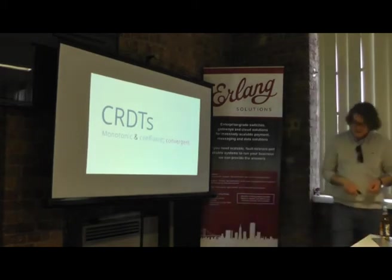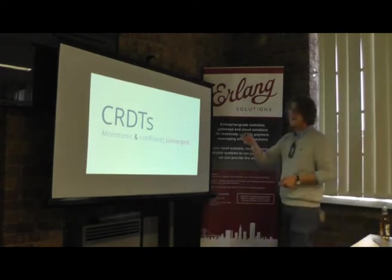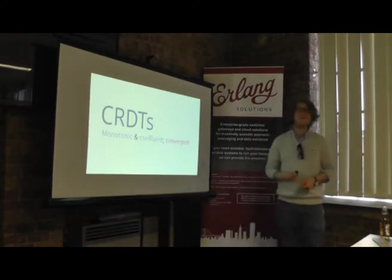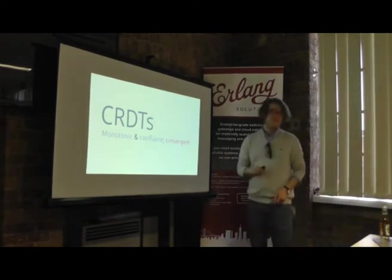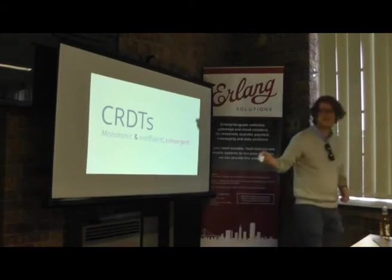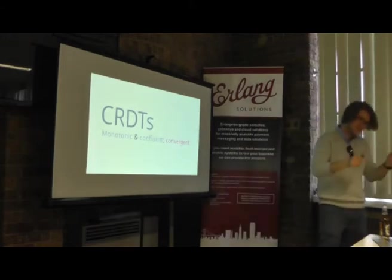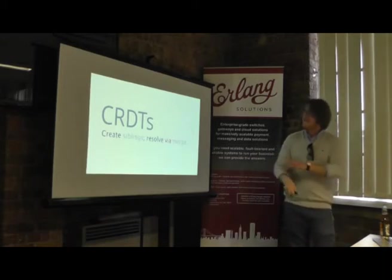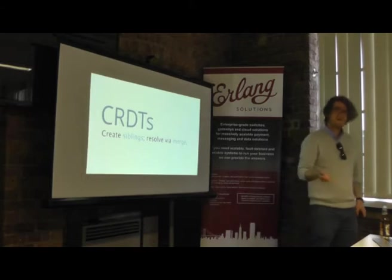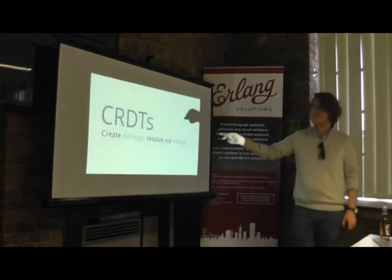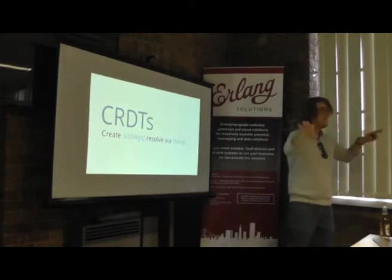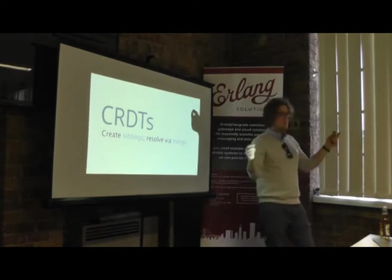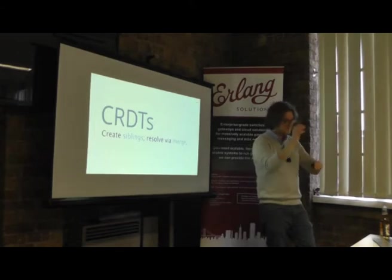To get mathematical: CRDTs are monotonic — their state always moves in one direction, presumably increasing. They're also confluent. When you have things that are monotonic and confluent, they're convergent, and that's what we care about. In terms of the Riak data store, we can run with allow-mult, create siblings, and we know how to resolve them. We have a mathematical foundation for merging: two sets across data centers with inserts, updates, and deletes on both sides will get the correct value upon merge.